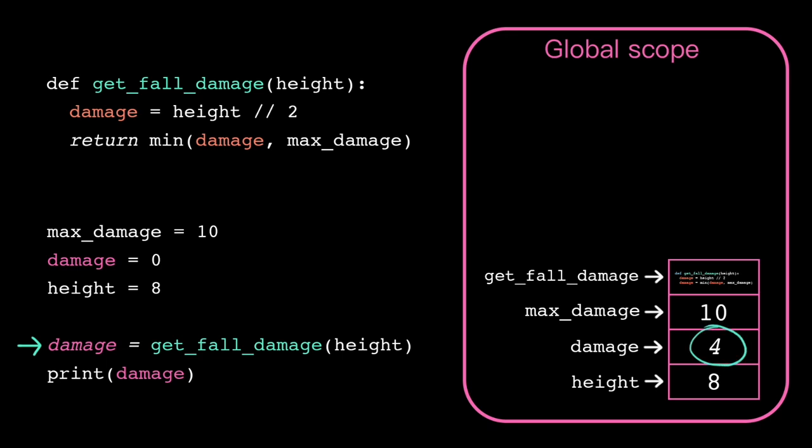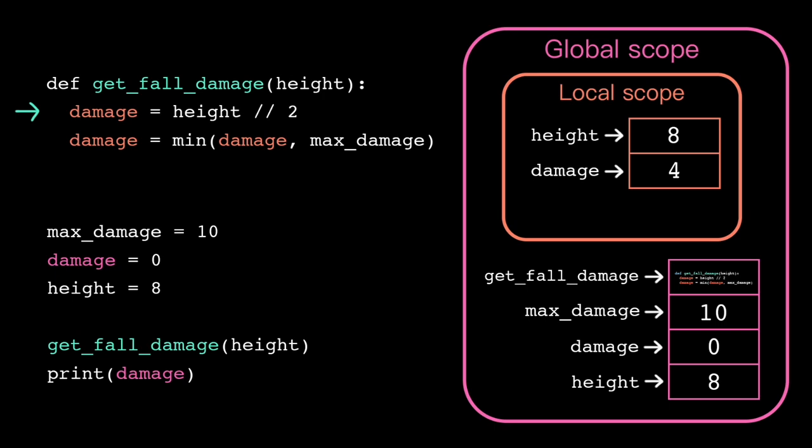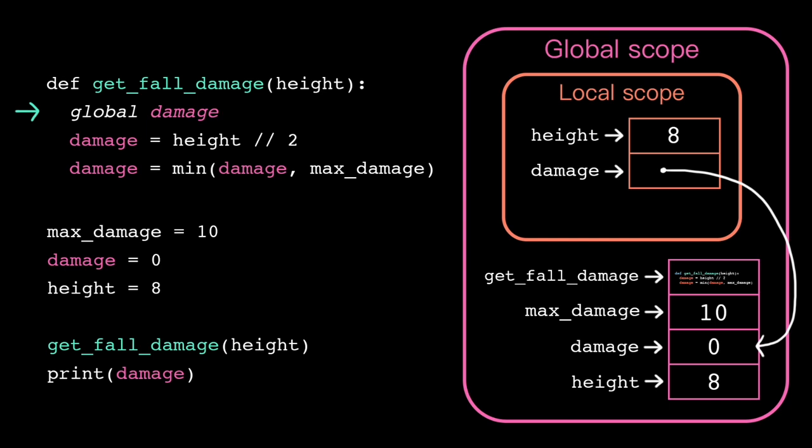Okay, but why is Python like this? Technically, we can force Python to access the variable in global scope instead. We put the keyword global and the name of the variable. But we should almost never do this. Python defaults to local scope for a reason.